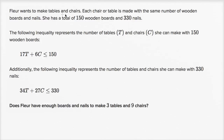Fleur wants to make tables and chairs. Each chair or table is made with the same number of wooden boards and nails. She has a total of 150 wooden boards and 330 nails. The following inequality represents the number of tables, T, and chairs, C, she can make with 150 wooden boards.